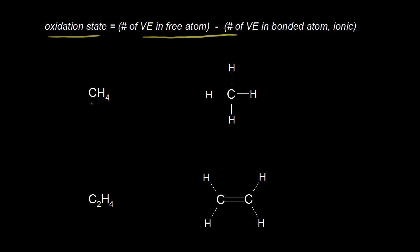Let's start with methane and find the oxidation state of carbon in methane. One approach is a general chemistry approach where we know that hydrogen usually has an oxidation state of plus one, and we have four hydrogens for a total of plus four. The sum has to equal zero, so carbon's oxidation state must be minus four, since we have only one carbon.